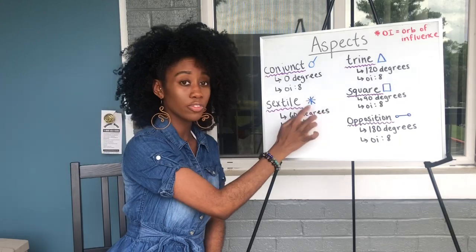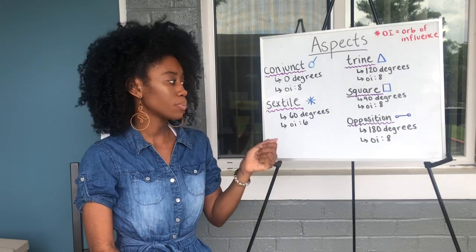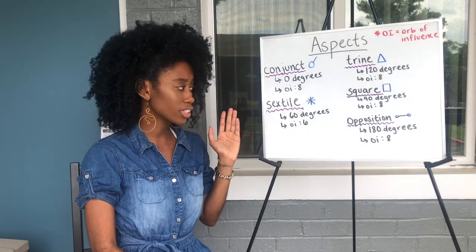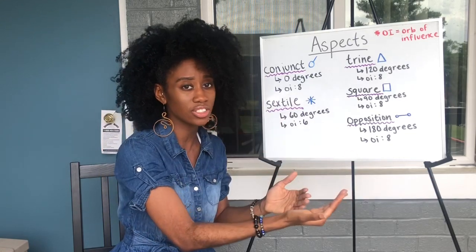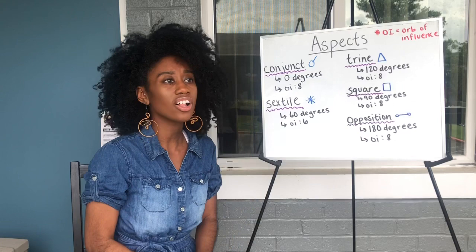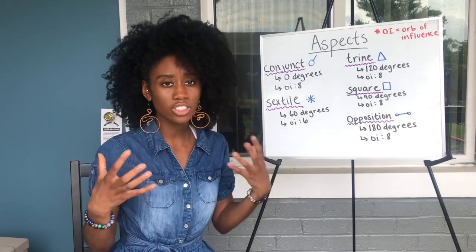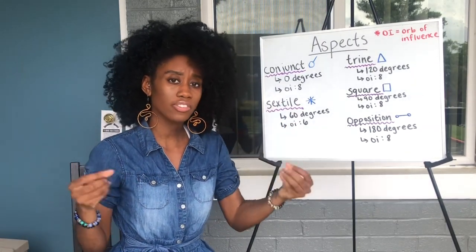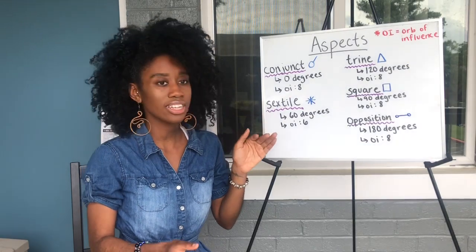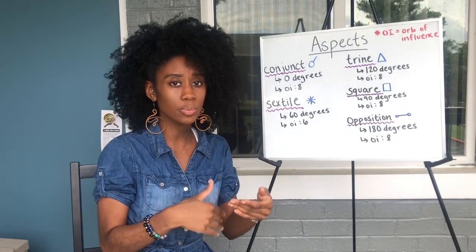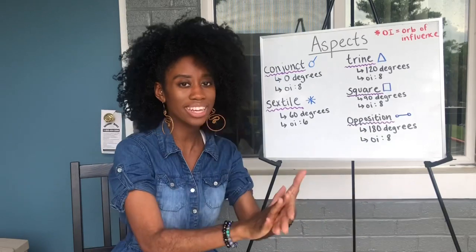Sextile — this is the symbol for sextile. They are 60 degrees with an OI of 6, which means these planets can be anywhere from 54 degrees to 66 degrees from each other. Sextile aspects are favorable — you want sextile aspects in your chart. When two planets are sextile, opportunities are going to come your way very easily. The opportunity presents itself, but you have to do the work to make it happen. The universe puts things in place for you, but you have to meet it halfway.